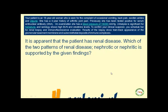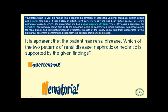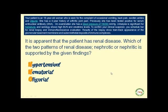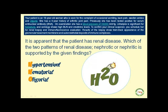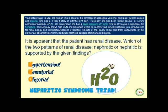Pay special attention to these keywords: hypertension, hematuria, and oliguria. They should remind you of our famous mnemonic H2O — where the superscript 2 reminds you of hypertension, or 'super-tension.' H2O was our famous mnemonic for the classic triad of nephritic syndrome.